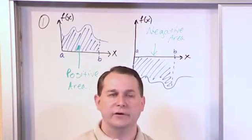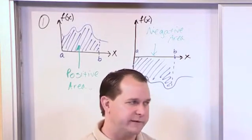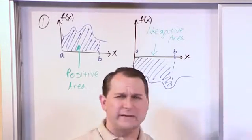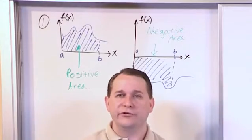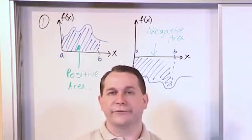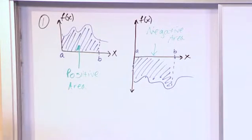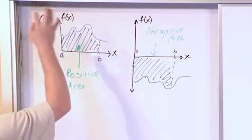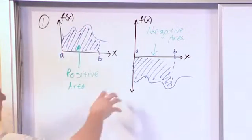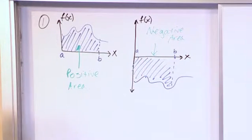If your function lies below the x-axis and you calculate the area, you're just going to get a negative answer. When you do the fundamental theorem of calculus and evaluate the top limit minus the bottom limit, what you're going to get is negative 5 or negative 3 or negative 10 or something like that if it's underneath here. So if your graph is above the x-axis, you'll get a positive area. If your graph is below the x-axis, you'll get a negative area when you calculate that definite integral.